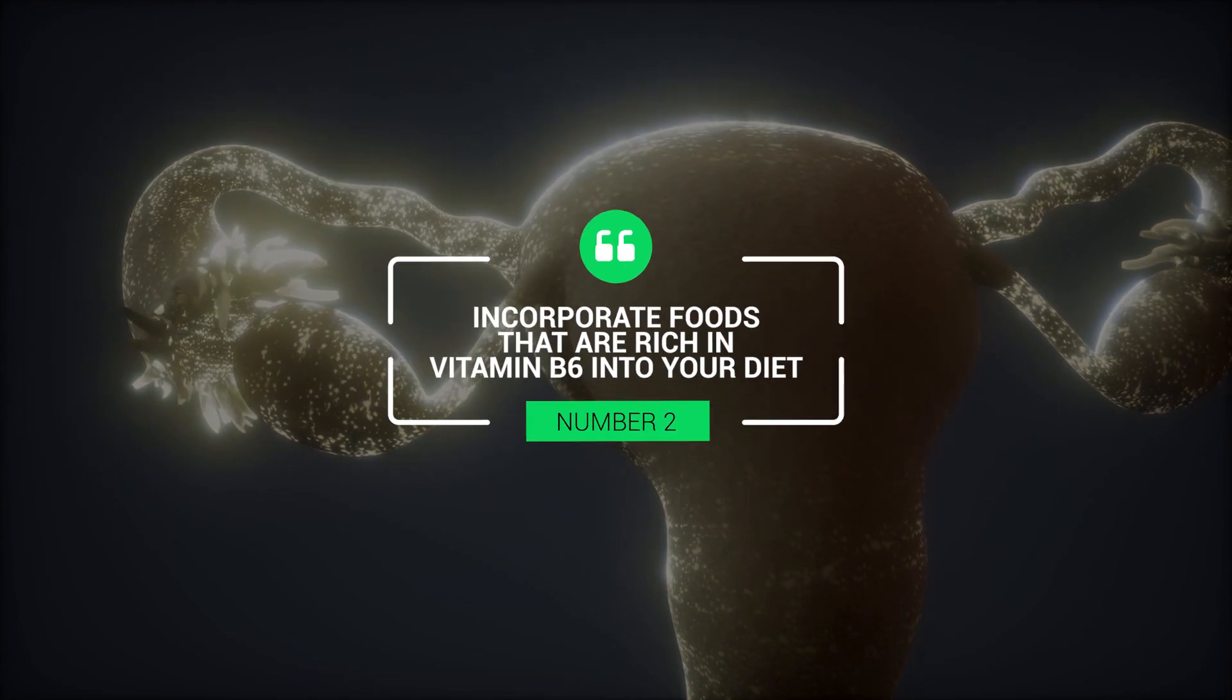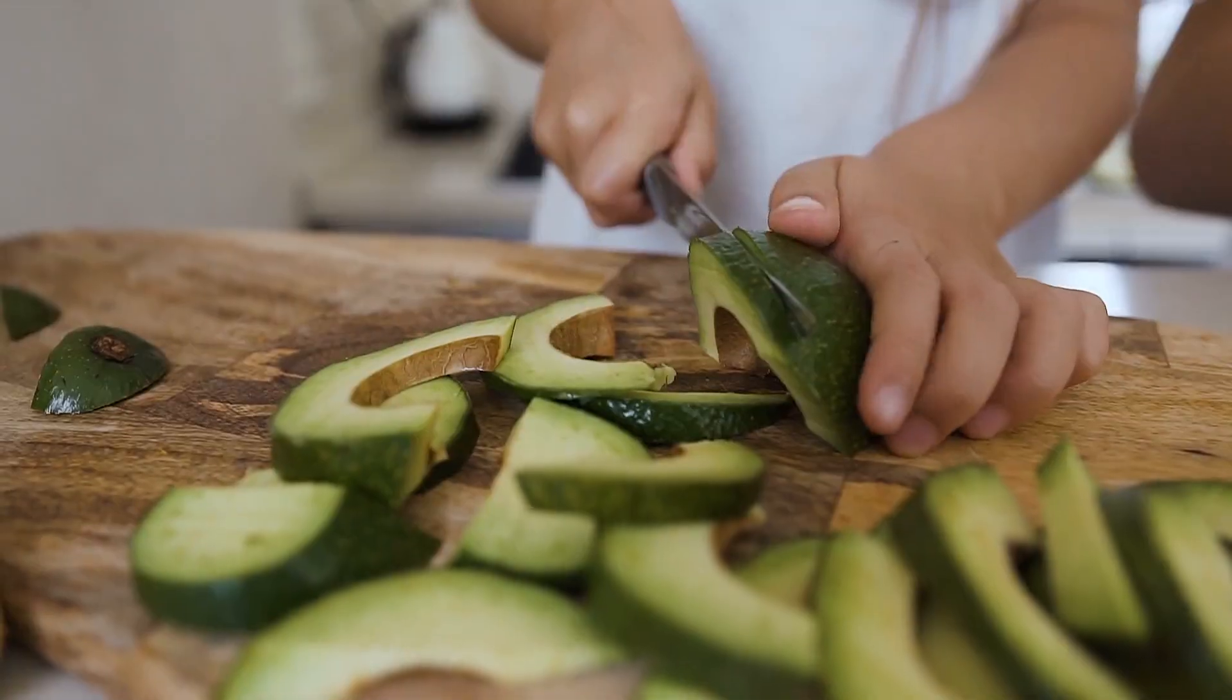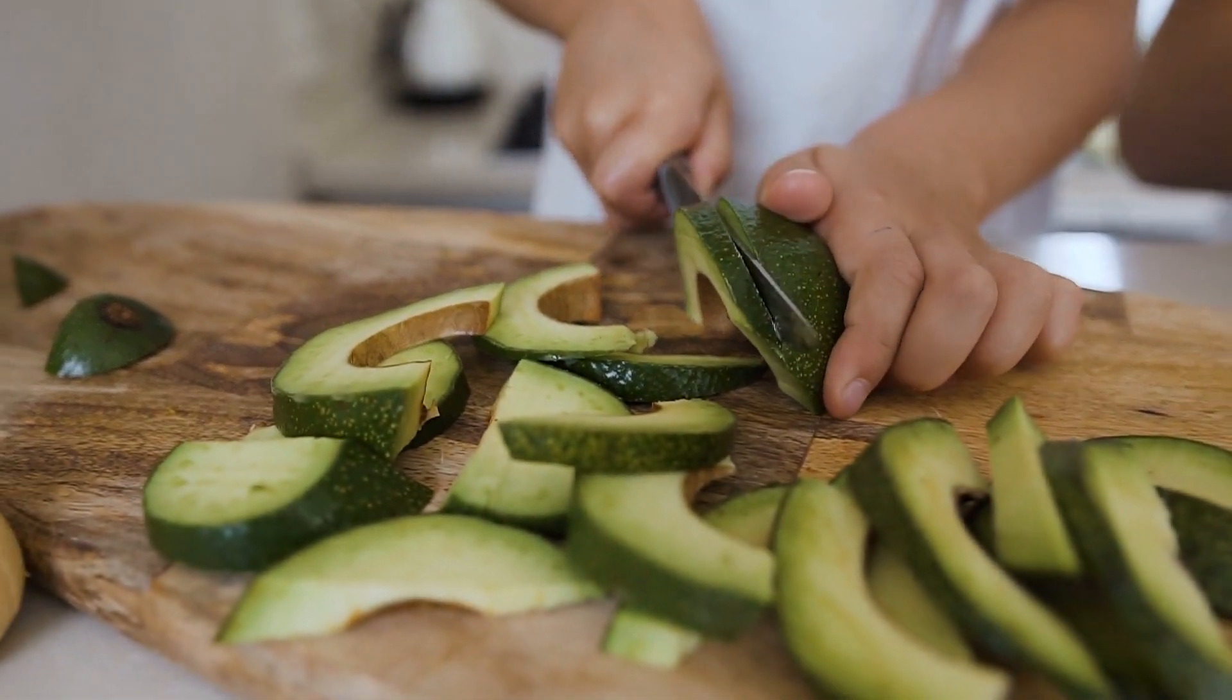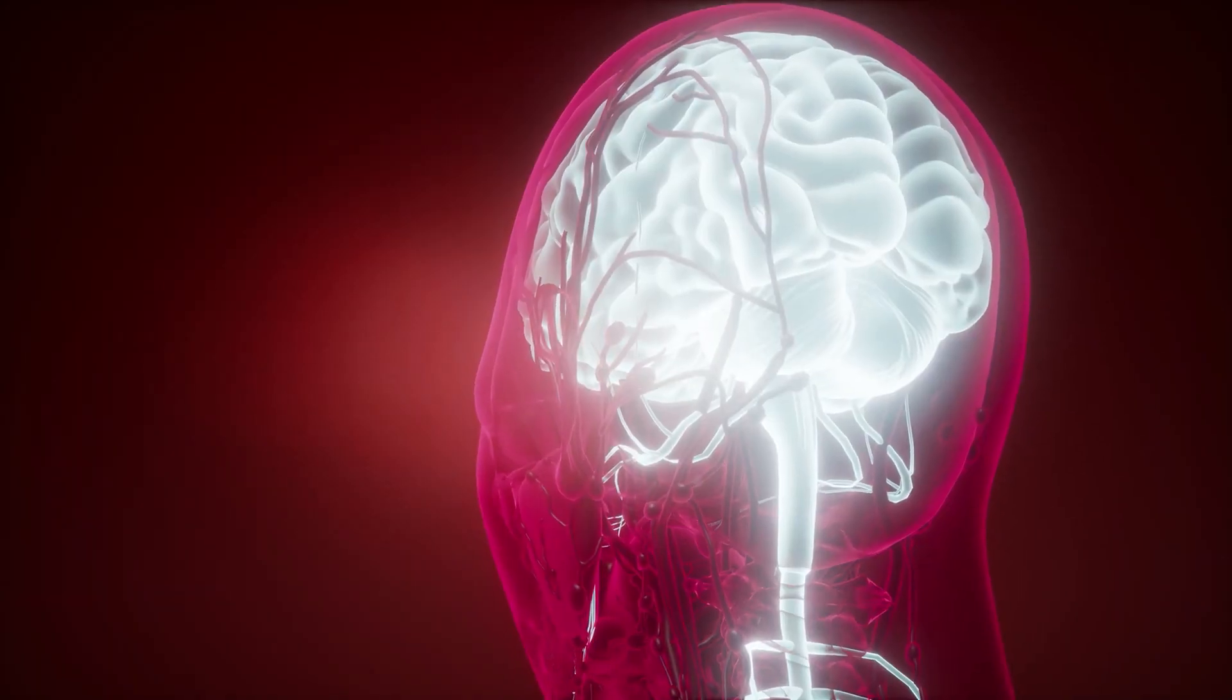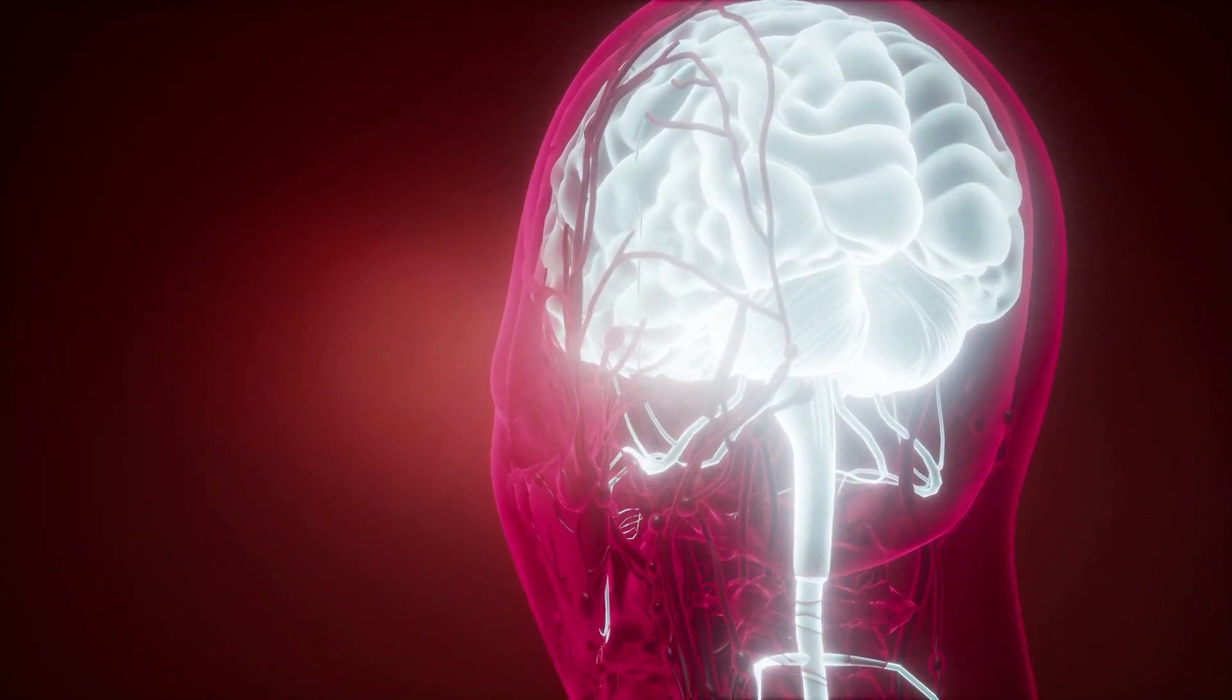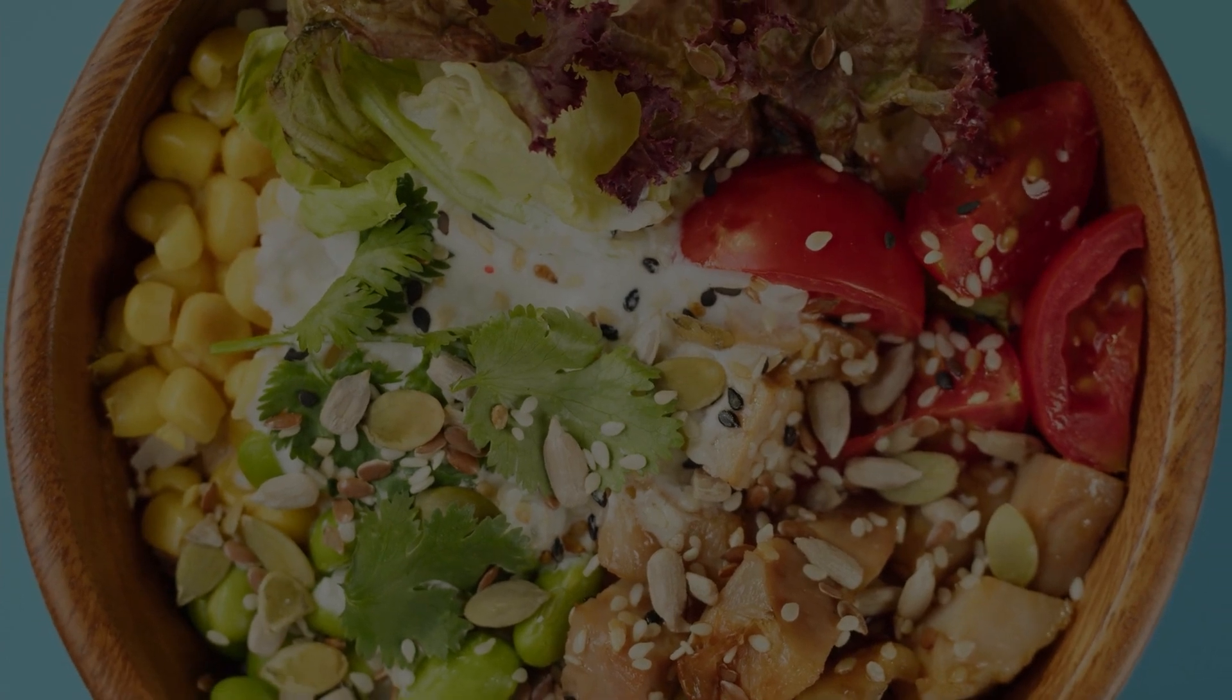Two, incorporate foods that are rich in vitamin B6 into your diet. When increasing progesterone levels, incorporating foods rich in vitamin B6 can be a great place to start.